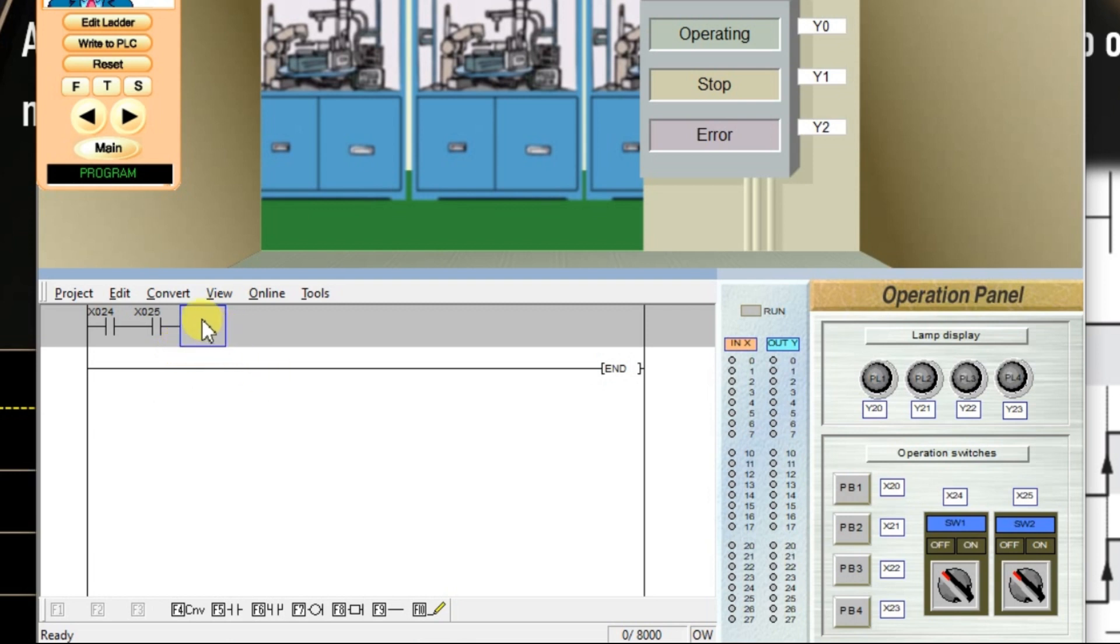And I want to connect one of the lamp. I am going to use the lamp from the simulation instead of operation panel. So I am going to use y0 operating lamp. Click coil. As I want to use operating lamp I have to enter y0. You can use the inputs and outputs from simulation or from operation panel. Click OK.